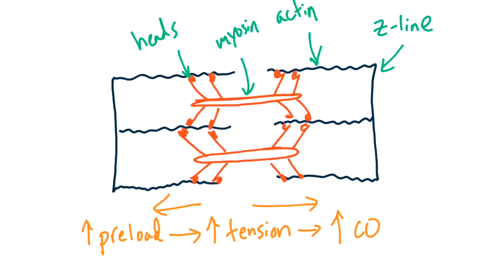However, if the volume increases too much, then the tension between the myosin heads and actin is such that it's harder for the heart to pump out the same volume of blood. This is easier to understand with the following exercise: flex your wrist and then try to make a fist — you'll notice it's a lot more difficult than just making a fist without flexing your wrist. This is similar to the idea with the heart. The sarcomeres have an optimal length-tension relationship, which is the basis for understanding the Starling curve.